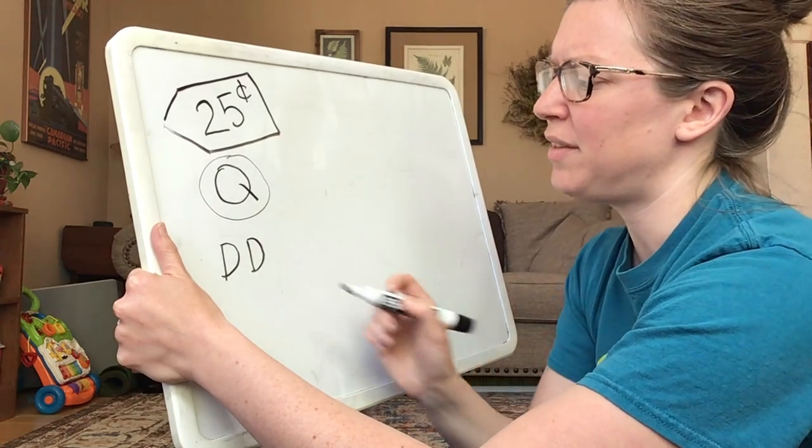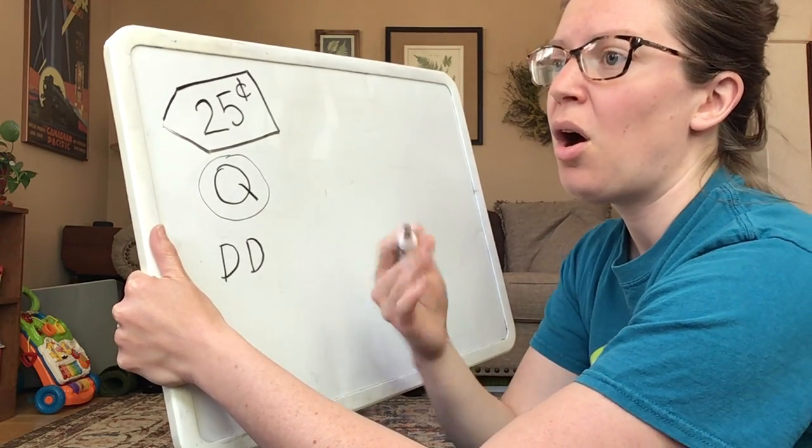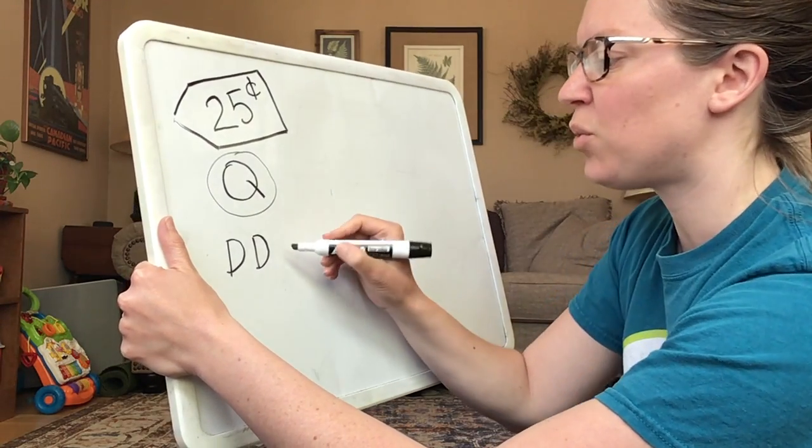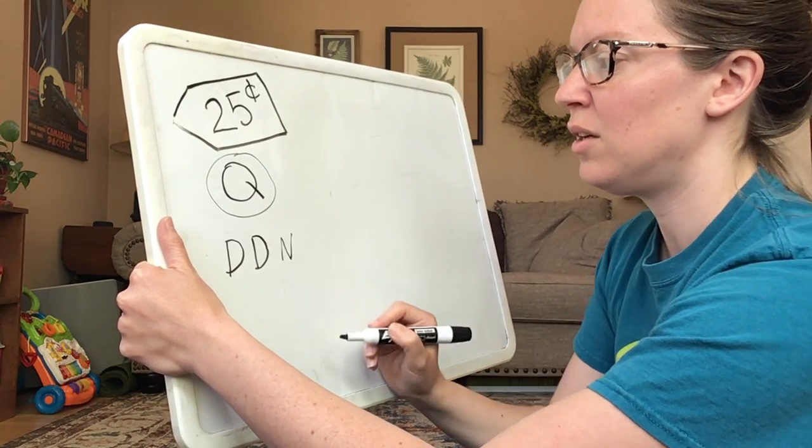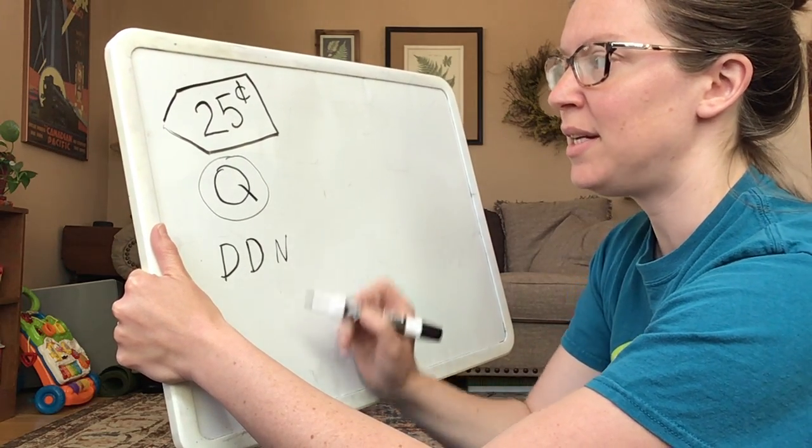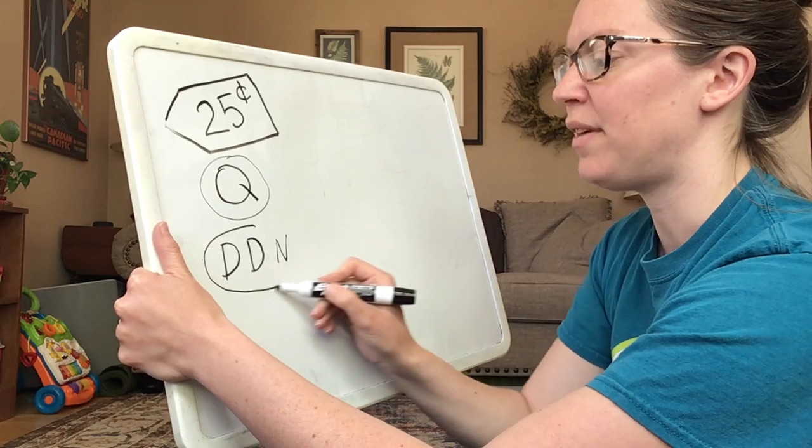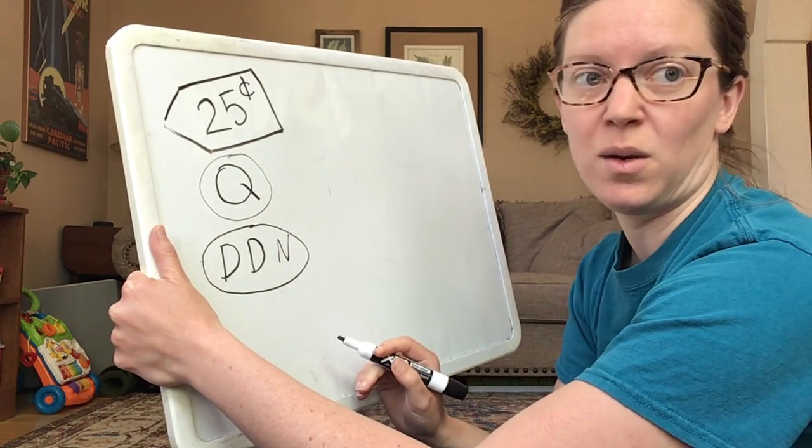What other coin could get me to 25 cents? 10, 20. Oh, hey, a nickel is worth five cents. So if I had two dimes and a nickel, that could also make 25 cents to pay for my banana. That's a second way I could do it.